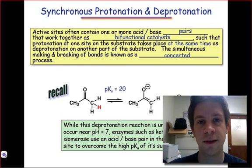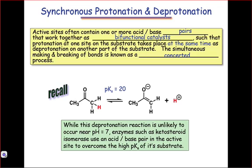In the lesson on catalysis, we noted that acids make molecules more electrophilic, while bases make molecules more nucleophilic. Enzymes have the ability to orient acids and bases very close to one another, and as a result, they can simultaneously render one substrate more electrophilic and one substrate nearby more nucleophilic, making the coupling of the electrophile and the nucleophile that much more favorable. That's the idea behind bifunctional catalysis, which always involves some kind of synchronous protonation and deprotonation event.